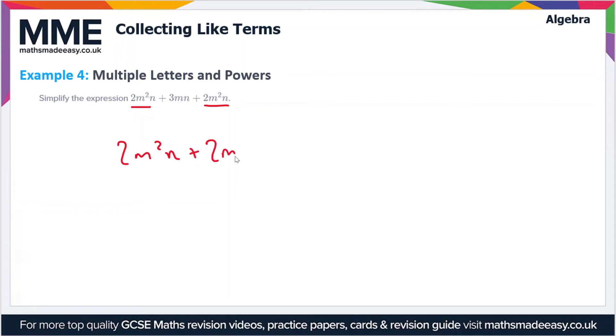And then we add 3mn on the end. So when we simplify this we get 4m squared n in total, plus the 3mn on the end. So that's the simplified form of the expression.